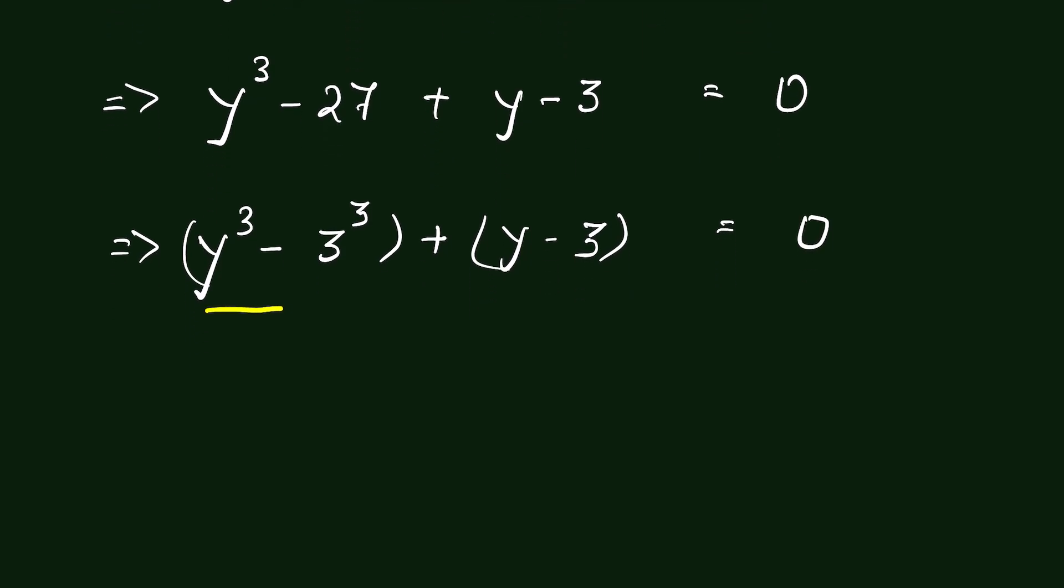Now this is in the form of a cube minus b cube and the expansion is a minus b parenthesis a square plus ab plus b square. Therefore, we can expand it as y minus 3 times y square plus 3y plus 3 square.